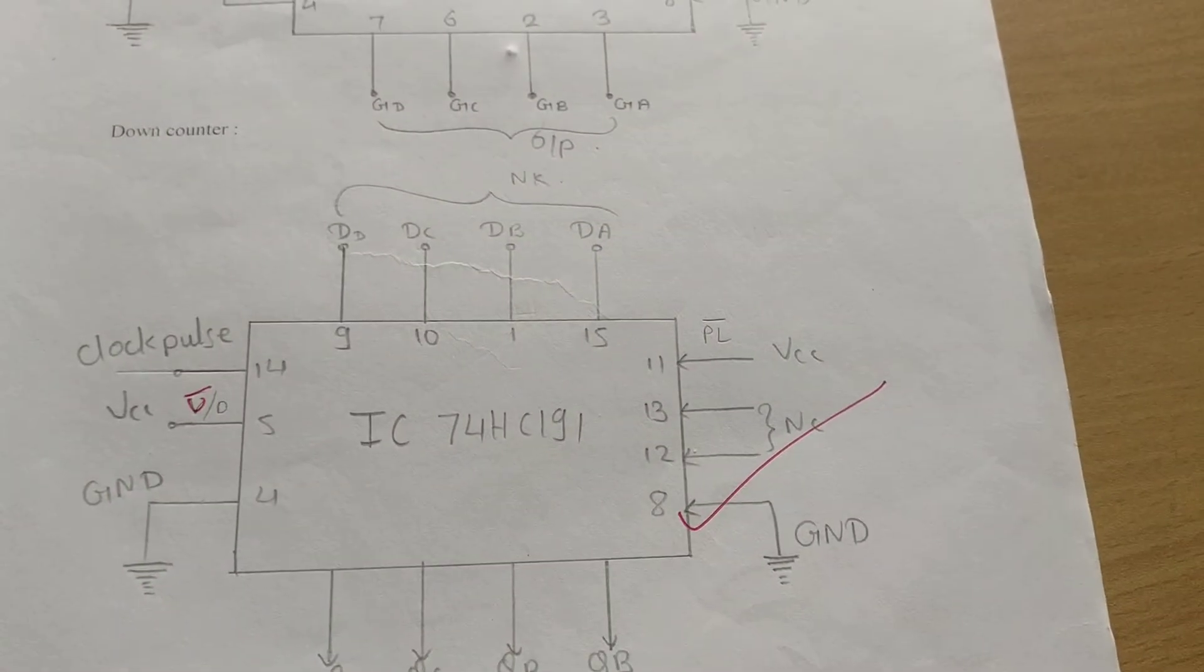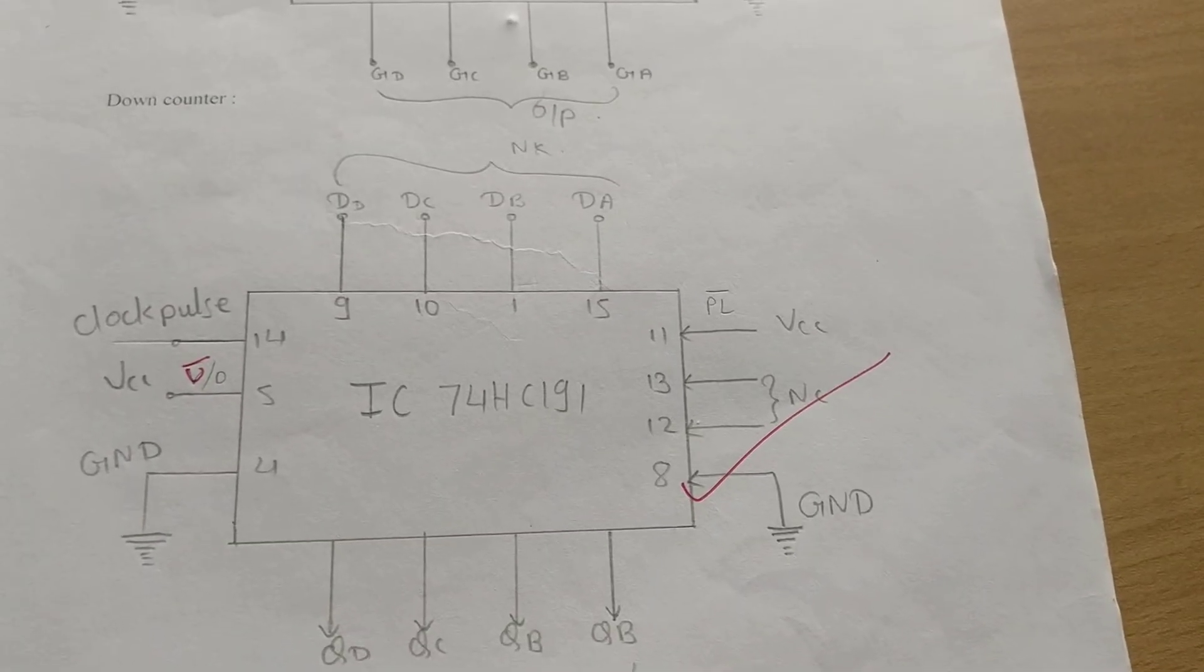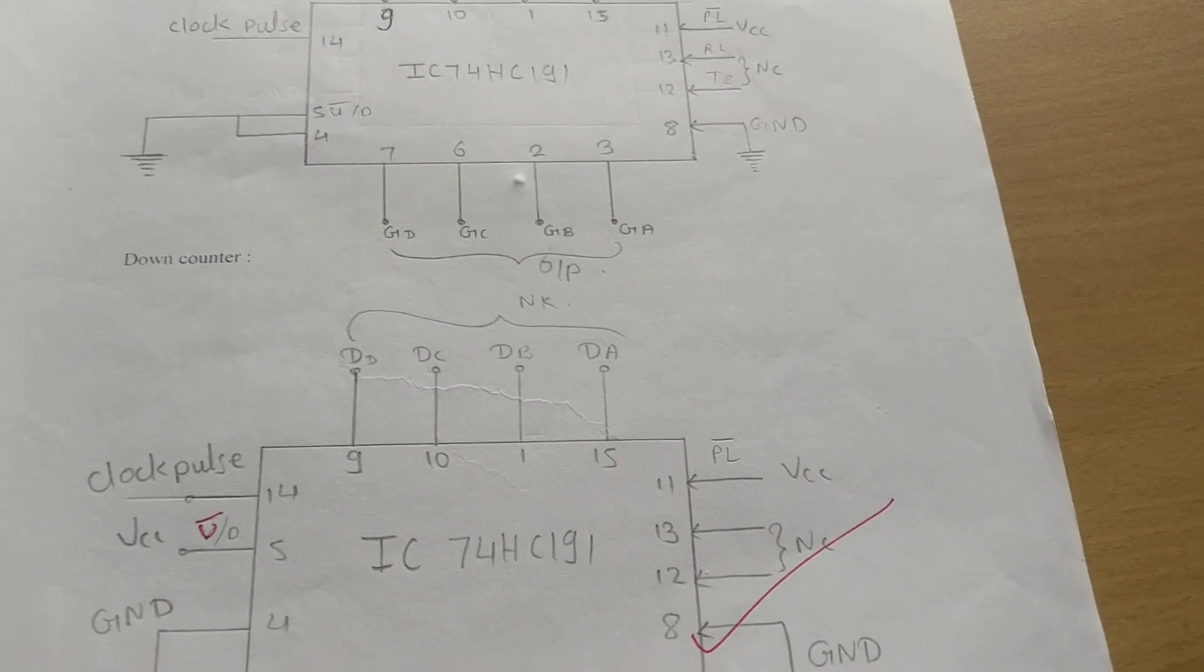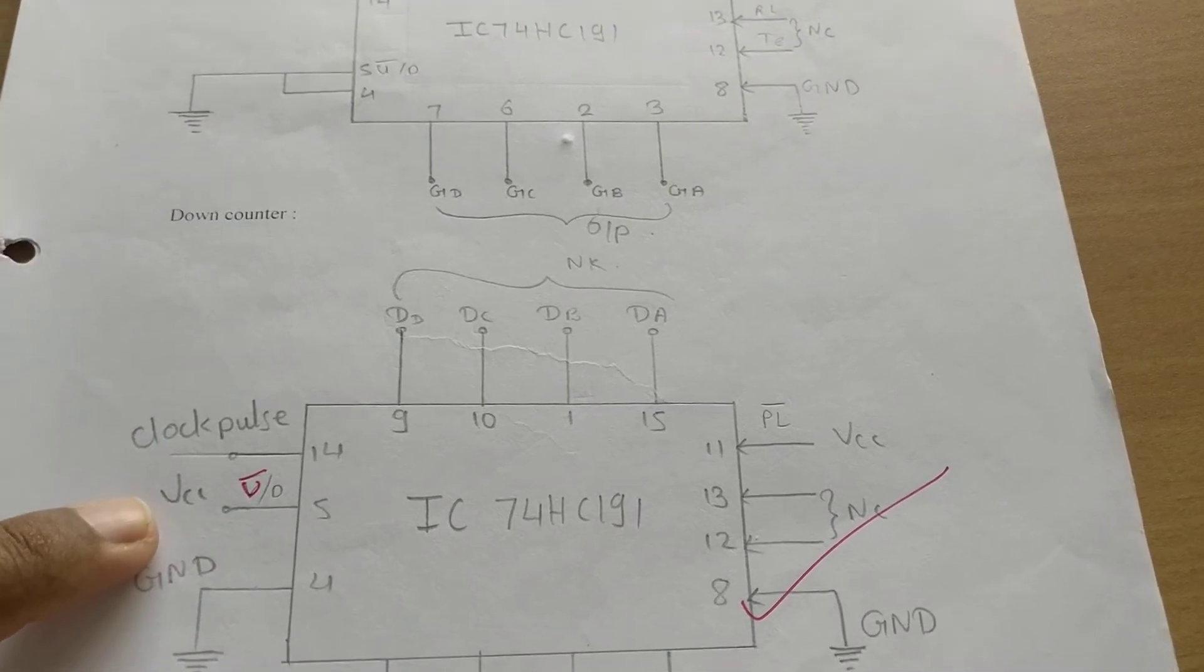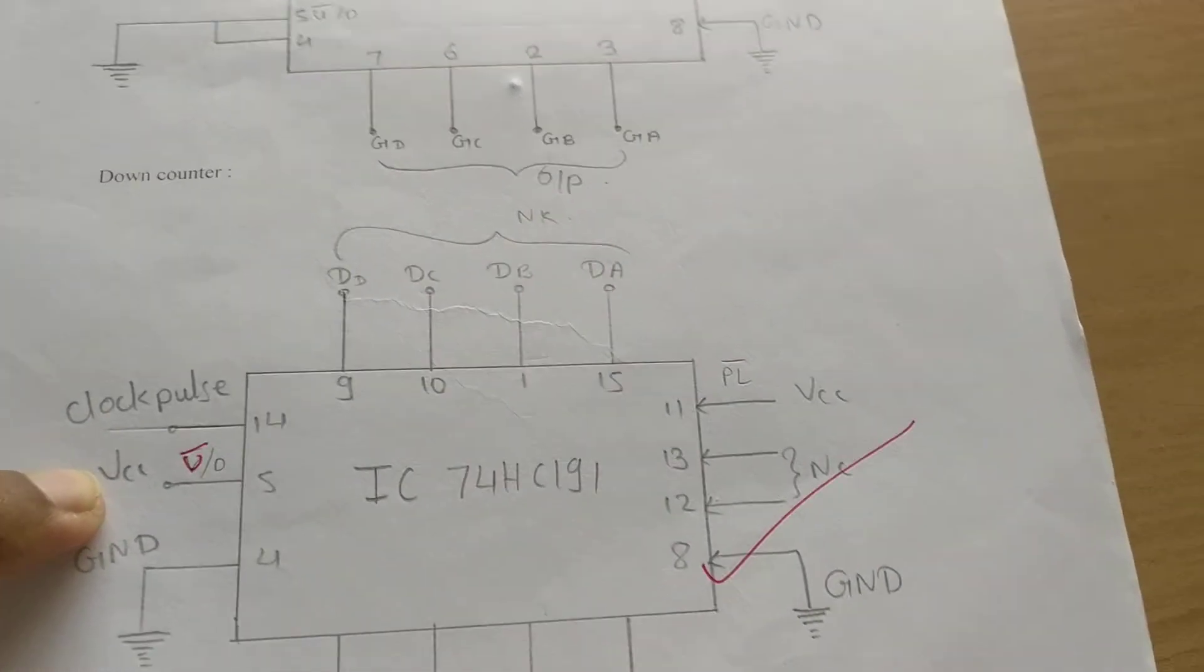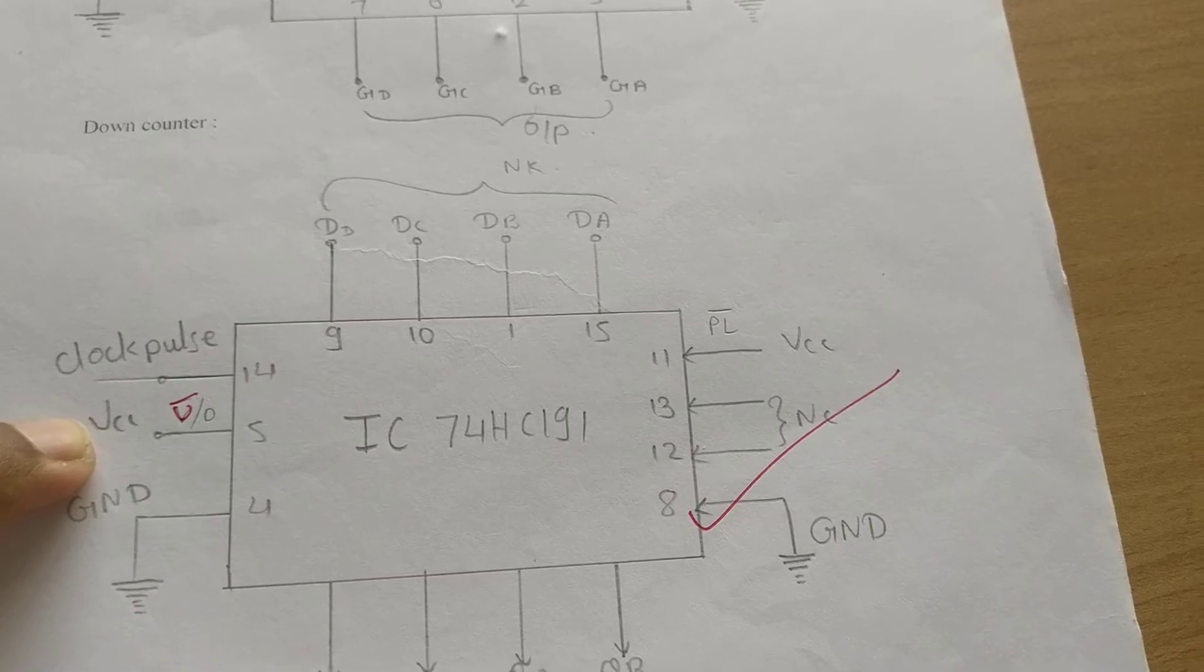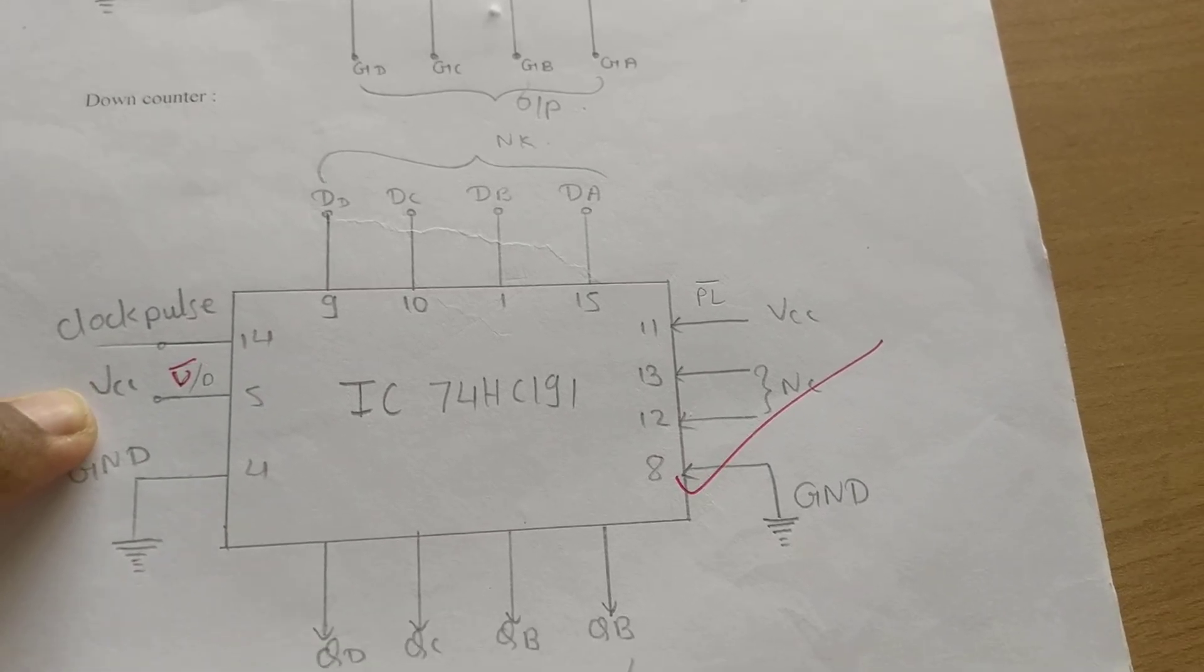Similarly, for the down-counter, the complete diagram is the same. Instead of pin number 5 being connected to ground, here pin number 5 is connected to VCC. Only that much difference, and this particular IC starts working as a down-counter.